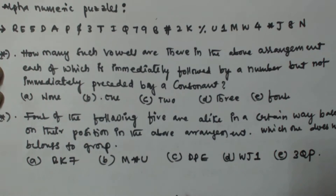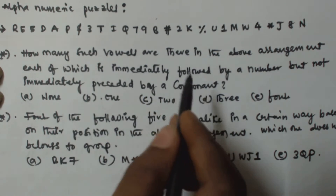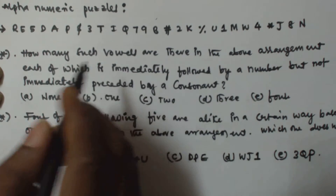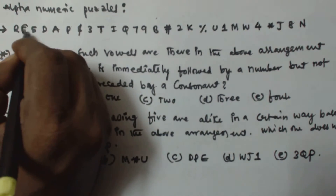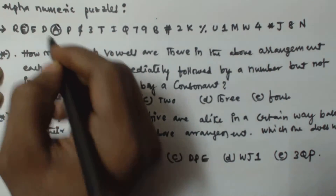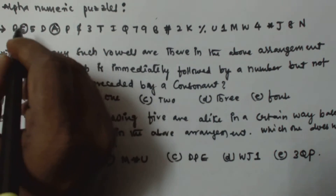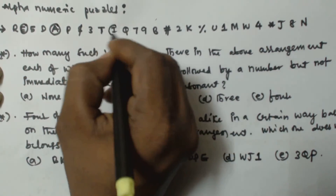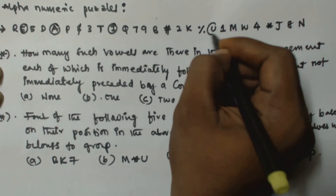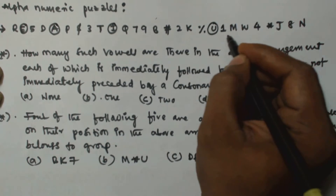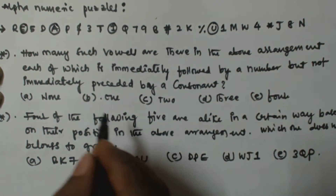For the first question, he is talking about vowels. First, identify the vowels — a, e, i, o, u. In the sequence, we have e, a, i, and u. So there are four vowels in total.